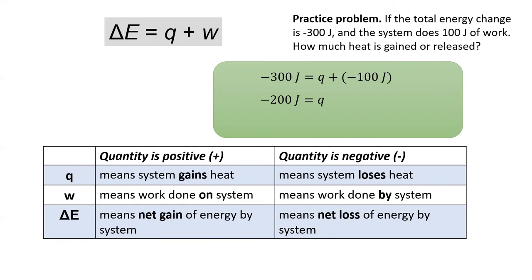So does the system gain or release 200 joules? Well, think of potential energy like money in the bank. If a transaction on your bank statement read minus $200, then your bank account would have lost $200. Therefore, in this problem, the heat was released.